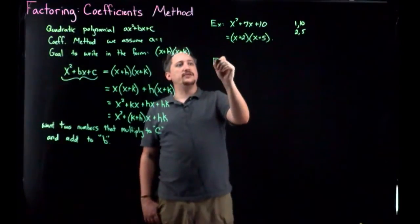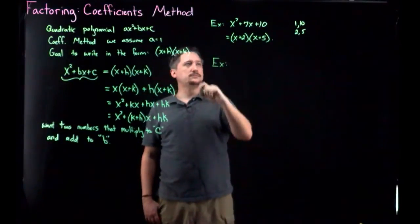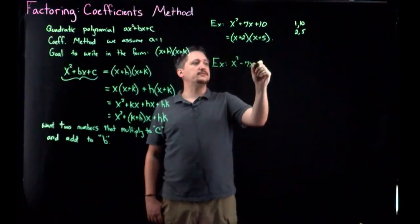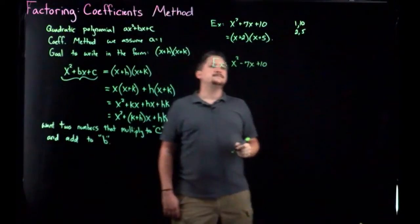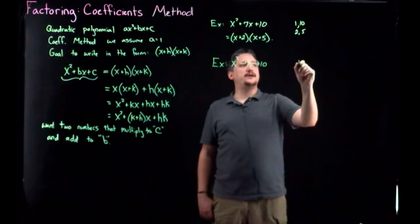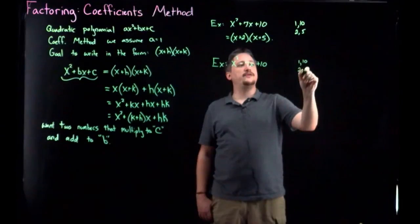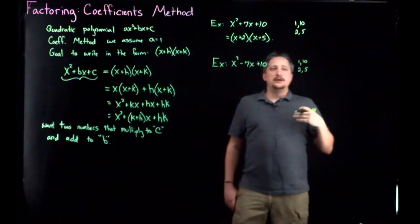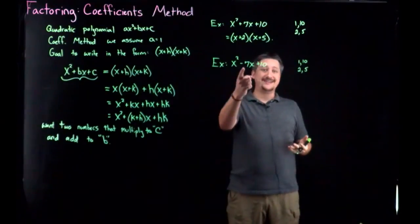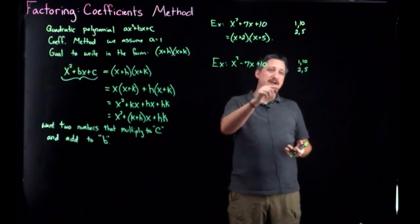So try another example. Let's do x squared minus 7x plus 10. So again, it's 10 at the end, so I have the same factors: 1 and 10, 2 and 5. But here, adding 1 and 10 is 11, adding 2 and 5 is 7. I need a negative 7. But remember, I could also, if I multiply both of them by negative 1, I'm not going to change their product.